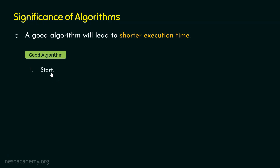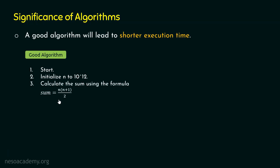Let's write a good algorithm to calculate the sum of first 10 to the power of 12 natural numbers. Step one: start the algorithm. Step two: initialize n to 10 to the power of 12. Step three: calculate sum using the formula n times n plus 1 divided by 2, instead of using a loop. Step four: output the value of sum. Step five: stop the algorithm.